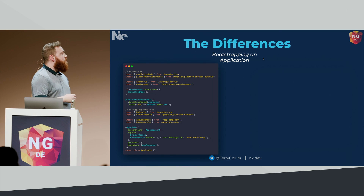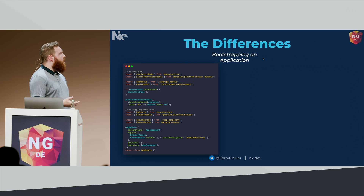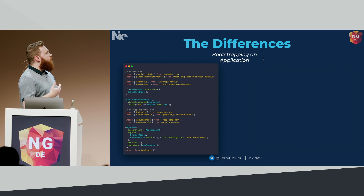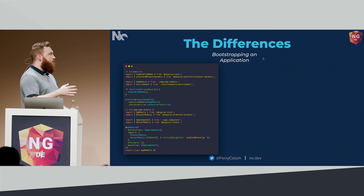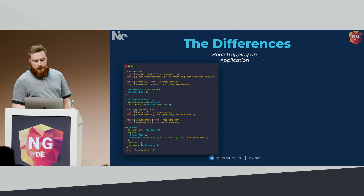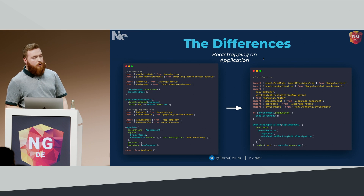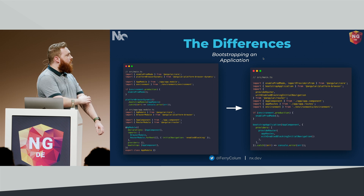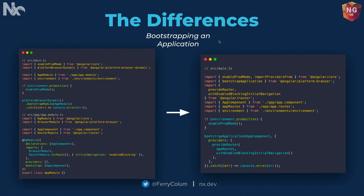And finally, one of the last changes is actually bootstrapping an application. Originally, this was split across two files: your main.ts file and your app module file. Your main.ts would tell the platform browser to bootstrap a module — that module was AppModule — so the rest of the bootstrapping happened in AppModule, which declared the component and then said we need to bootstrap this component. With standalone components, it all merges into one file — the main.ts file. We use the new bootstrapApplication API, tell it the standalone component we want to bootstrap, and then we can provide some root-level providers, so this is where we could provide our router using the provideRouter API.